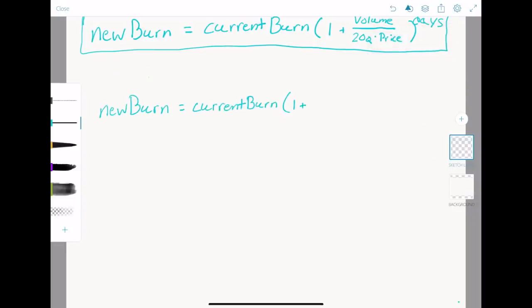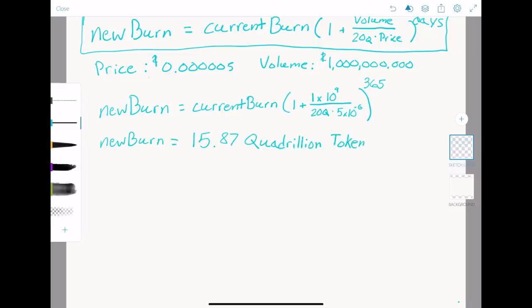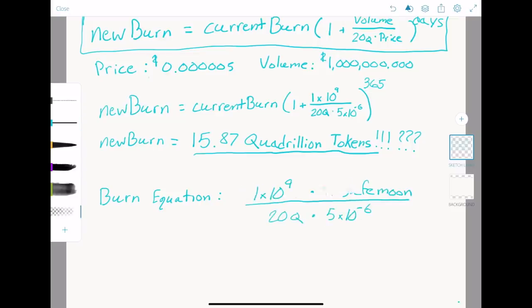Now this is important. Let's say the price stays where it is now, around $0.000005, and we see volumes close to $1 billion per day once all the catalysts come to pass. Our compounding interest equation tells us the burn wallet will have burnt 15.87 quadrillion tokens. Now before you close the video and say this guy doesn't know what the hell he's talking about, there's only 580 trillion tokens left, just step back and think about this with me. Our burn equation tells us that $1 billion of volume at this price burns 4 trillion 200 billion tokens per day. When that compounds, we would burn through the entire supply of SafeMoon within a hundred days.